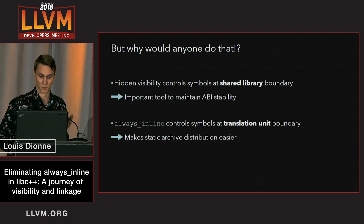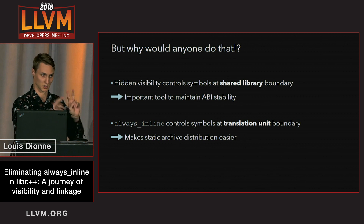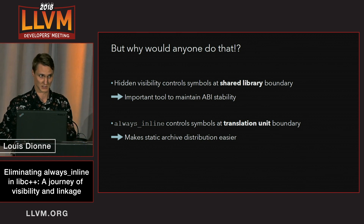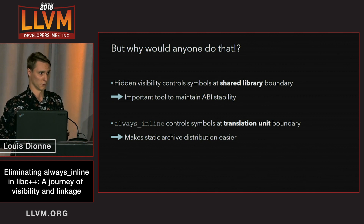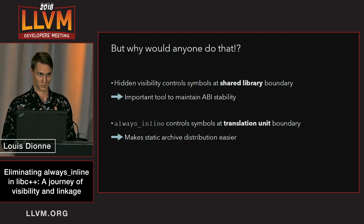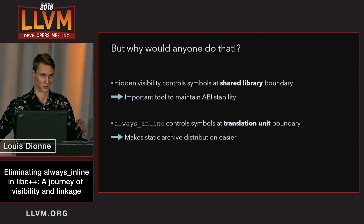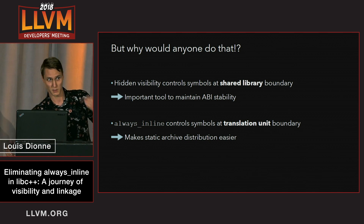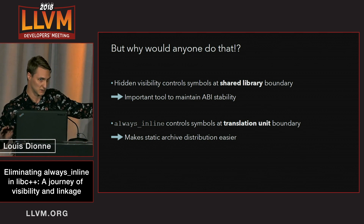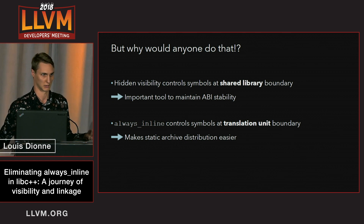What about always_inline? The purpose of that one is to control what symbols appear at the translation unit boundary. It allows us to link together translation units that were built with different versions of libc++. The problem is that if you have inline functions emitted in two different translation units and then link them together, they get ODR-deduplicated. If you built the two translation units with different headers, the definition of the inline functions in each translation unit could be different, causing an ODR violation. So we mark these functions as always_inline — they're never emitted in translation units — and we sidestep the problem completely. That's helpful when distributing static archives.